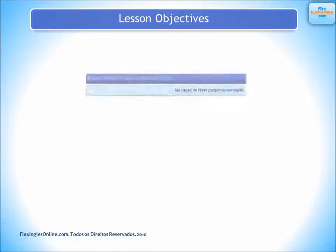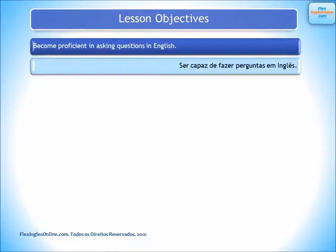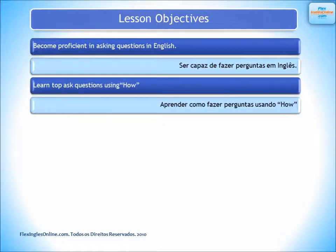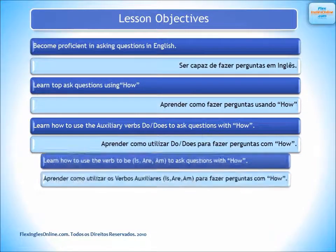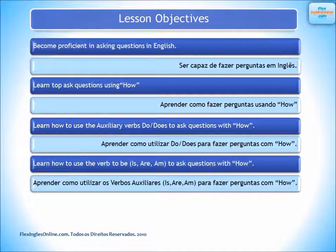Lesson Objectives: Become proficient in asking questions in English. Learn to ask questions using how. Learn how to use the auxiliary verbs do and does to ask questions with how, and also learn how to use the verb to be — is, or am — to ask questions with how.